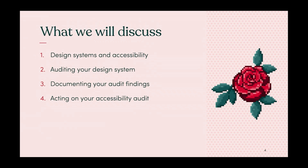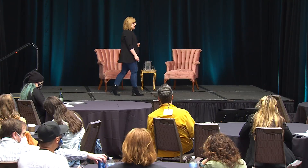Let's talk about what we're going to get into today. We're going to talk about design systems and accessibility, but I really want us to focus in on auditing our design systems for accessibility. We'll talk about what goes into our audits, what we review, and how to document our findings and act on them. We'll also get into the nuance — the 'it depends' situations.